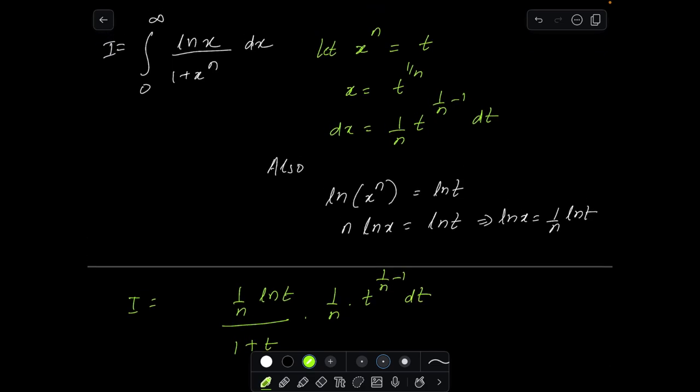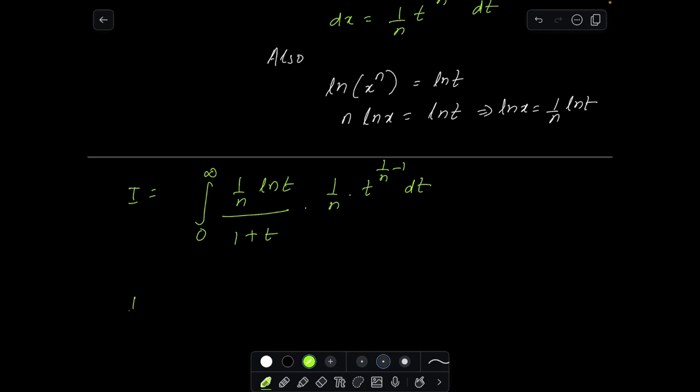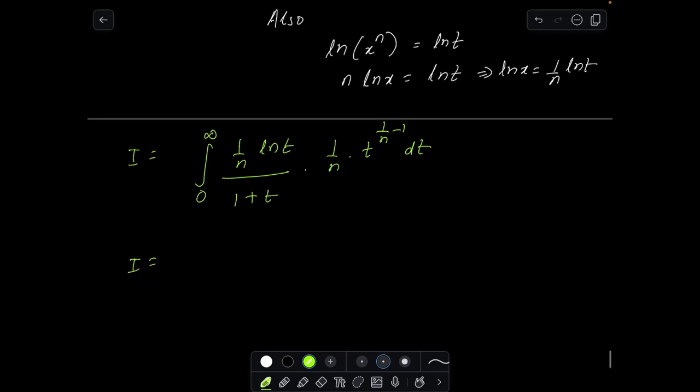Now limits of integration: if you put x as 0, t will also be 0, and if you put x as infinity, t will also be infinity, so limits of integration remain unchanged. So what happens to our integral? It becomes 1 by n square integral from 0 to infinity ln t into t to the power 1 by n minus 1 by 1 plus t dt.